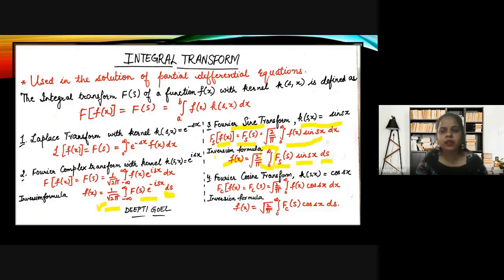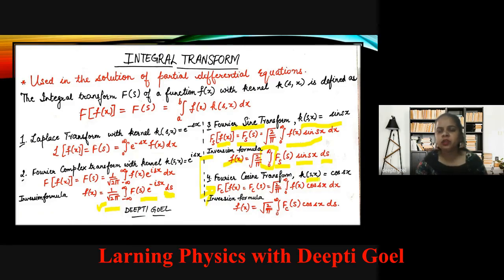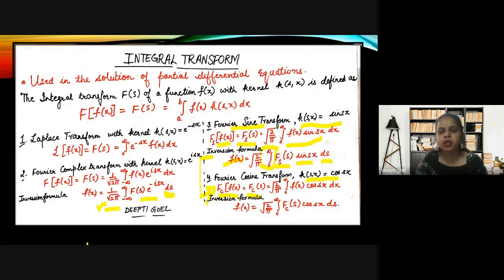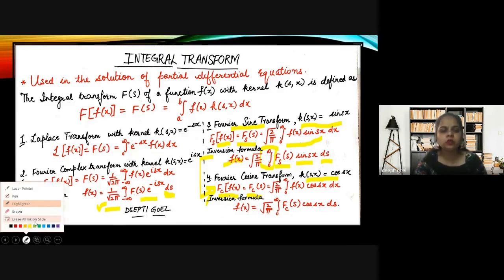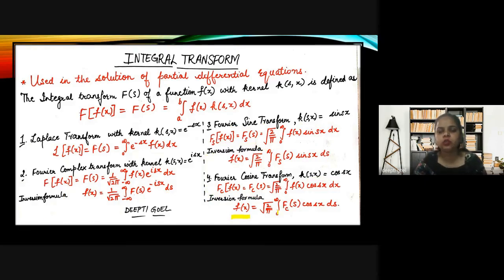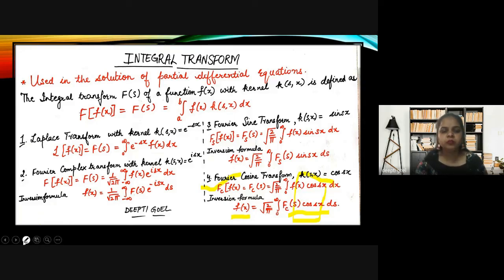On the same parallel lines as the Fourier sine transform, we now discuss the Fourier cosine transform. In the Fourier cosine transform the kernel is k(s,x) equal to cos(sx). The Fourier cosine transform Fc(s) equals root(2/π) integration from 0 to infinity of f(x) cos(sx) dx. Its inversion formula is f(x) equal to root(2/π) integration from 0 to infinity of Fc(s) cos(sx) ds. Since the cosine kernel is present, this is regarded as the Fourier cosine transform.